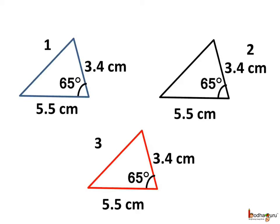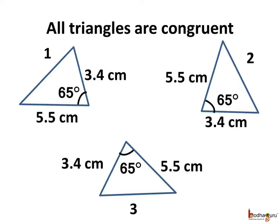But look closely. If we just rotate triangle 2 and triangle 3, they will match with the first one in shape and in size. We can superpose one onto the other. It means they are congruent. So when the length of two sides and the measurement of the angle between them are given, whatever triangle we draw, they are all congruent.